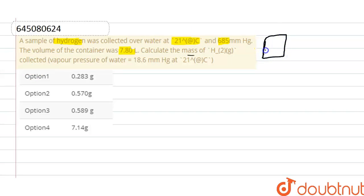So this is our container, and in this container hydrogen and water is present. The pressure of this whole mixture is 685 mm Hg, and vapor pressure of pure water is given. It is 18.6 mm Hg.